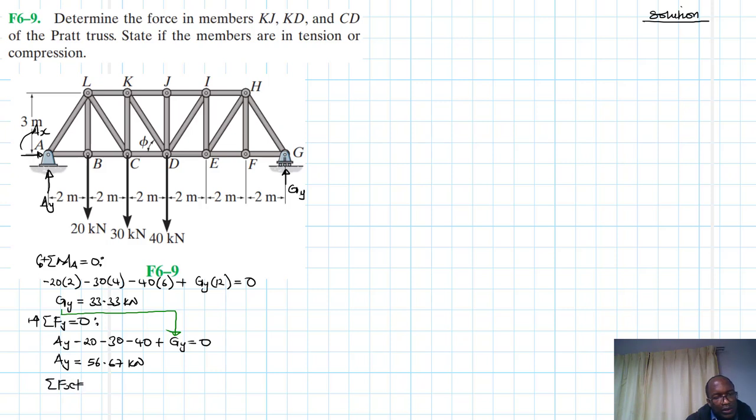Then we have summation of forces in the X direction. We have AX just equal to zero kilonewtons. So let's make a section here. We have the left-hand side and the right-hand side. We are going to go with the left-hand side because we'll start with taking moments about point D to find KJ. Once we find KJ, then we are going to sum up the other equations to find KD and CD. But let's find theta.